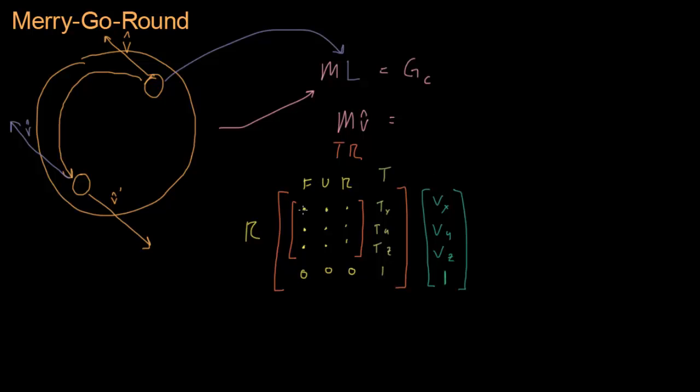So let's see what we get. We get VX times the forward vector, VY times the up vector, VZ times the right vector, and then 1 times the translation. Except, wait a minute. Wait a minute. We don't want to translate this matrix.